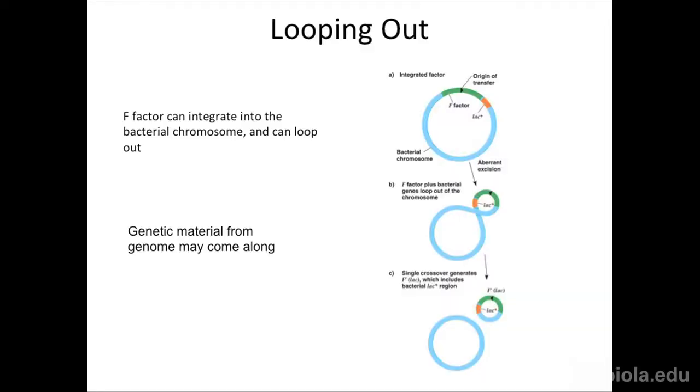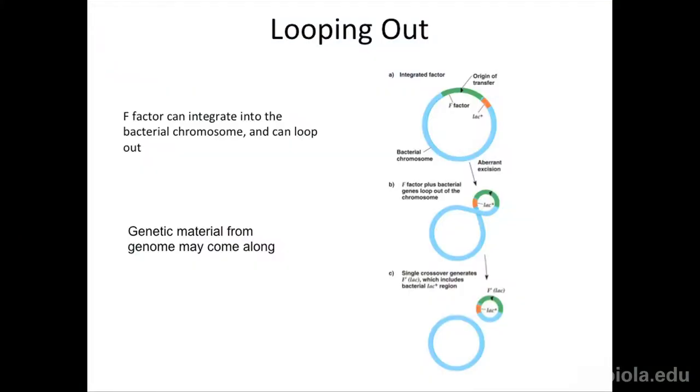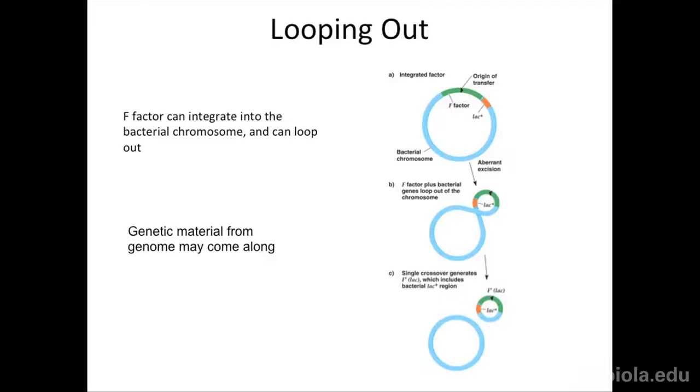Now we have a plasmid that contains all the information that used to be on the plasmid itself, but it also has additional sequence from the genome. In orange here is lac-plus, the gene that allows this bacteria to metabolize lactose instead of glucose. So now I have a plasmid carrying an actual functional gene for some metabolic process. It's still a plasmid — not part of the genome — but now it has genome genes on it. If this plasmid gets exchanged between bacteria, we can actually exchange genetic information without any further recombination.